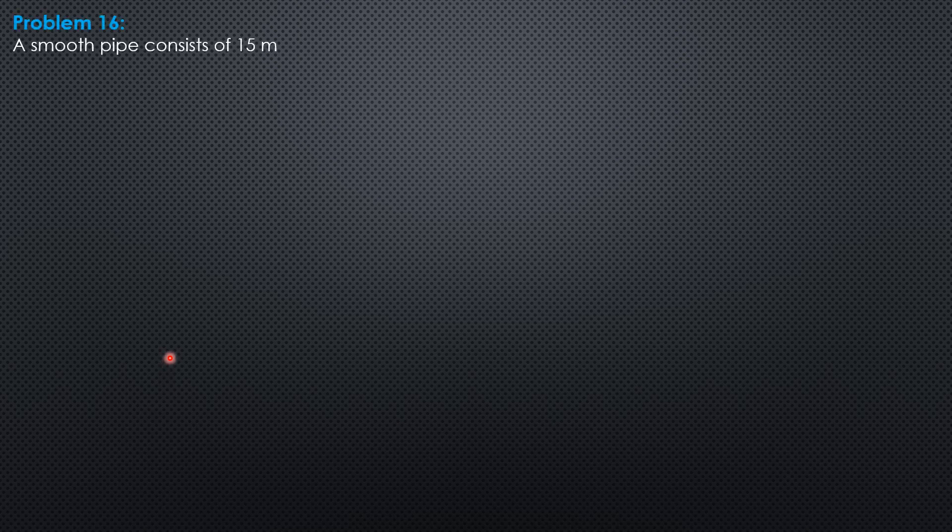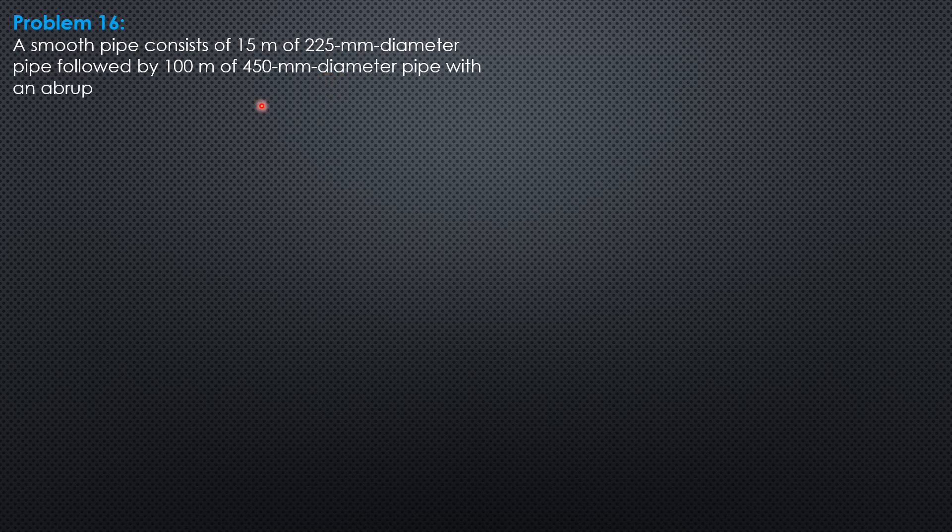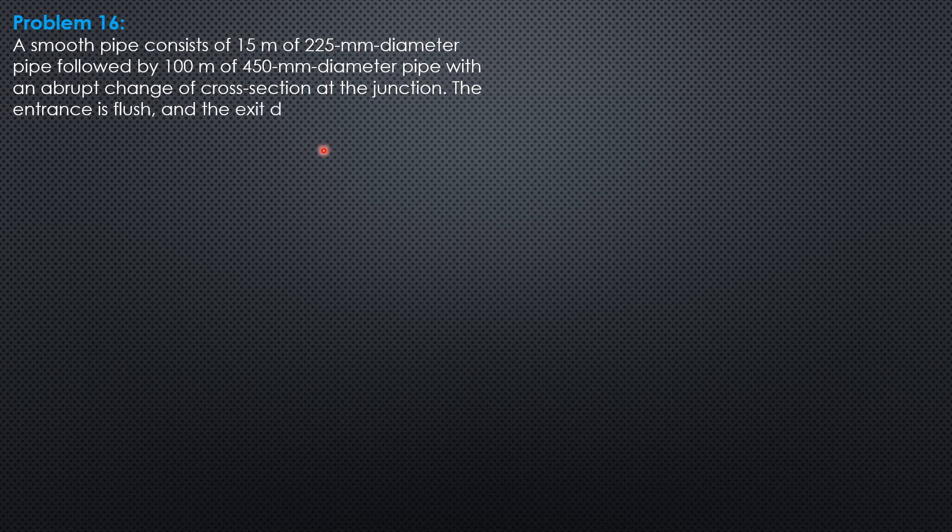Sample 16. A smooth pipe consists of 15 meters of 225 mm diameter pipe followed by 100 meters of 450 mm diameter pipe with an abrupt change of cross-section at the junction.